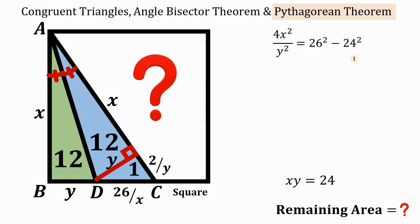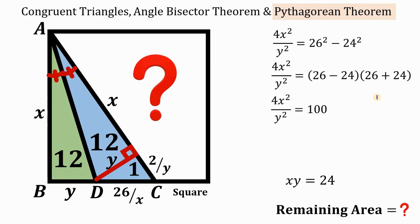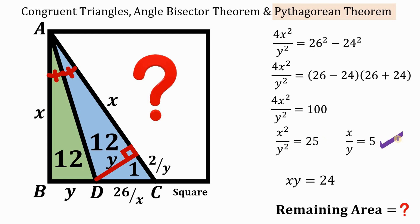On the right-hand side we use the difference of two squares: 26² − 24² = (26 − 24)(26 + 24) = 2 × 50 = 100. Dividing both sides by 4 gives x²/y² = 25. Taking the square root, since x and y are side lengths, x/y = 5.